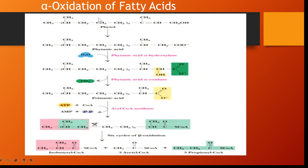This is the pathway for alpha oxidation of fatty acid. In this alpha oxidation, phytol is a compound which is present in plant foods and this phytol can be converted into phytanic acid in the presence of the enzyme phytanic acid alpha hydroxylase. Alpha oxidation means the first carbon is oxidized — the first carbon is COOH and the alpha carbon, the second carbon, is the alpha carbon, hence it is called alpha oxidation.